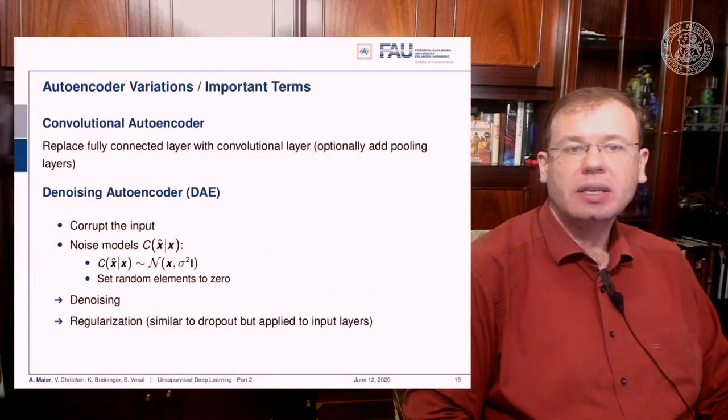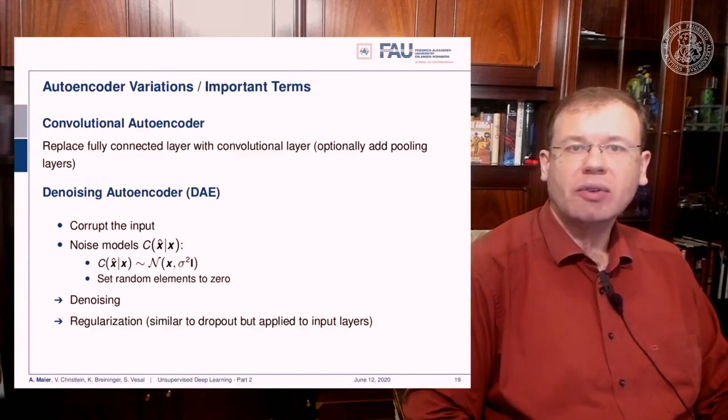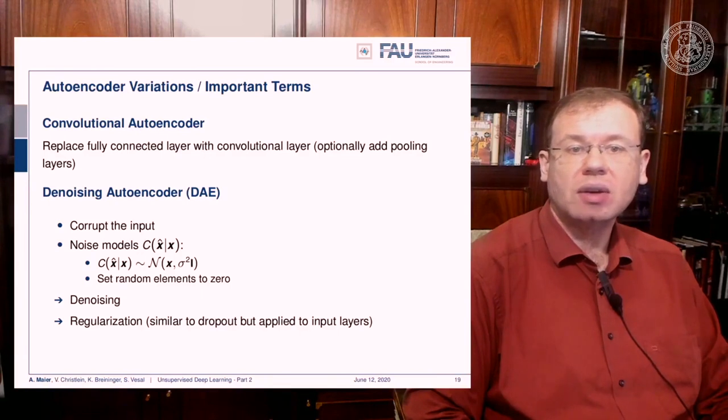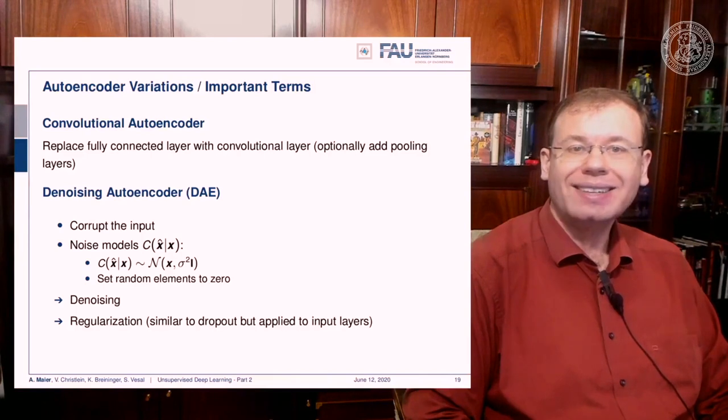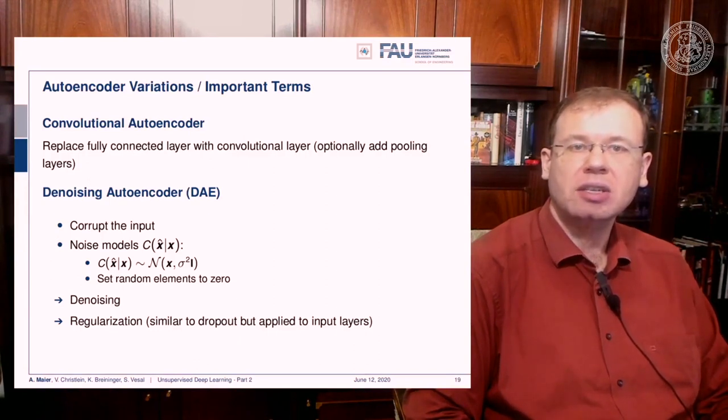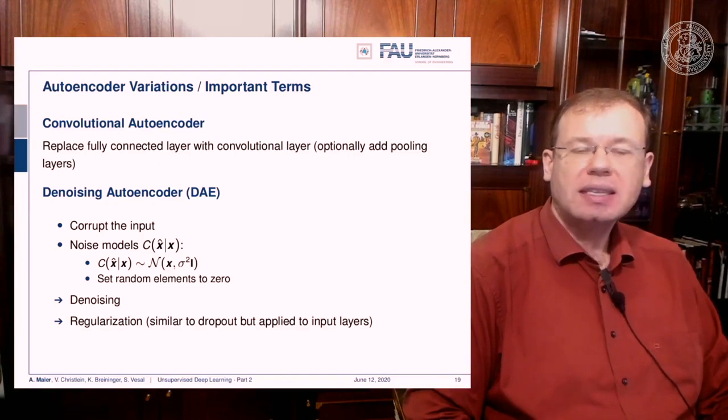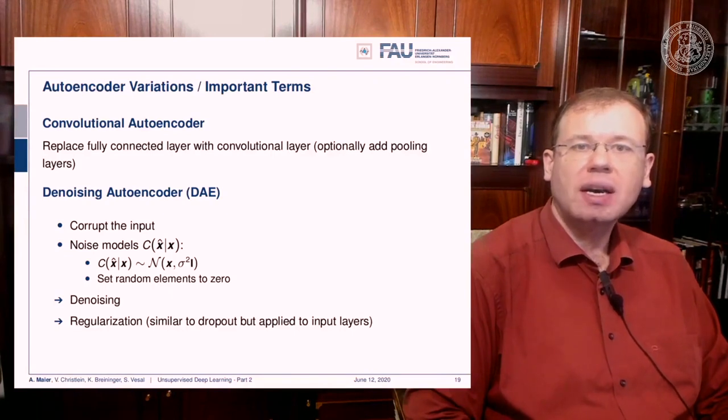What else can be done? Well, you can use autoencoder variations. You can combine it essentially with all the recipes we've learned so far in this class. You can build convolutional autoencoders. There you replace the fully connected layers with convolutional layers, and you can optionally also add pooling layers. There is the denoising autoencoder, which is also a very interesting concept. There you corrupt the input with noise, and the target is then the noise-free original sample. So this then results in a trained system that does not just do like dimensionality reduction or finding a sparse representation, but at the same time it also performs denoising. And you could argue that this is an additional regularization that is similar to dropout but essentially applied to the input layers.